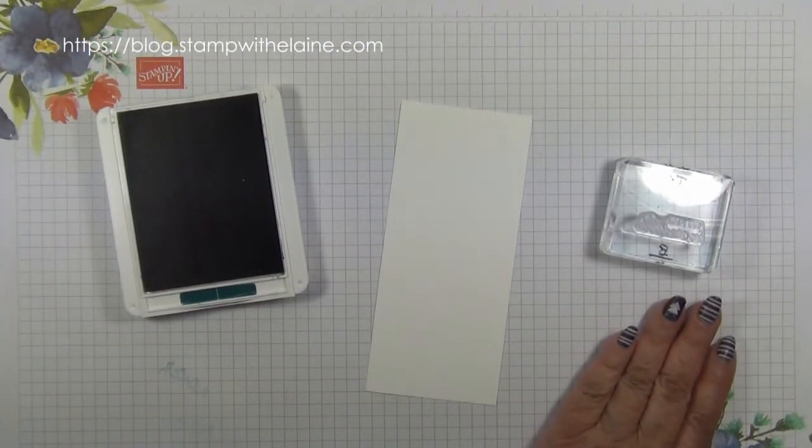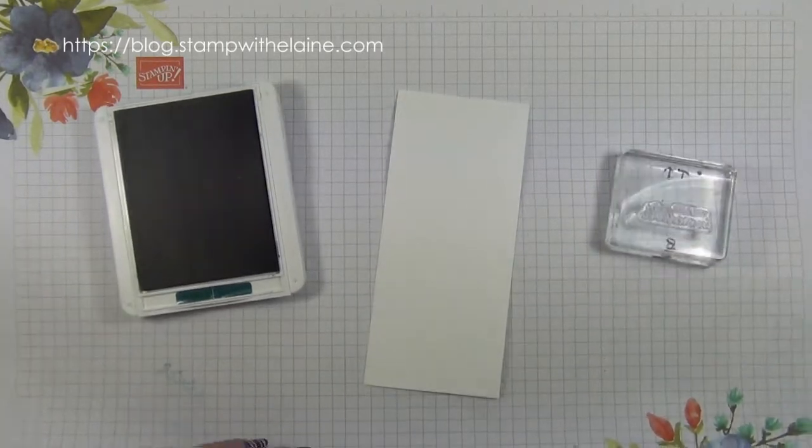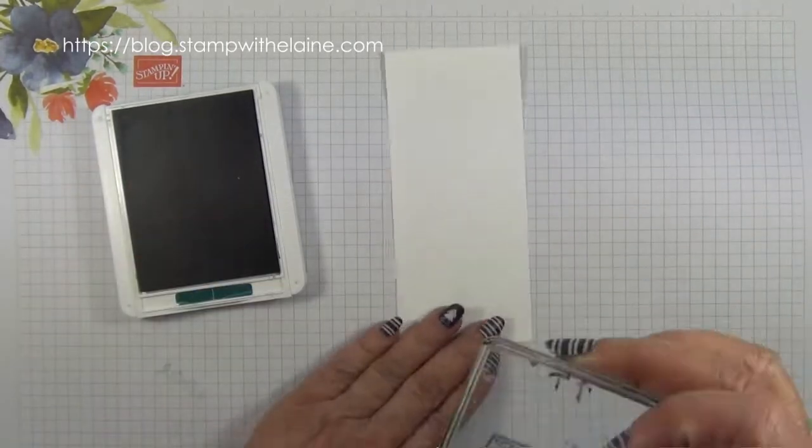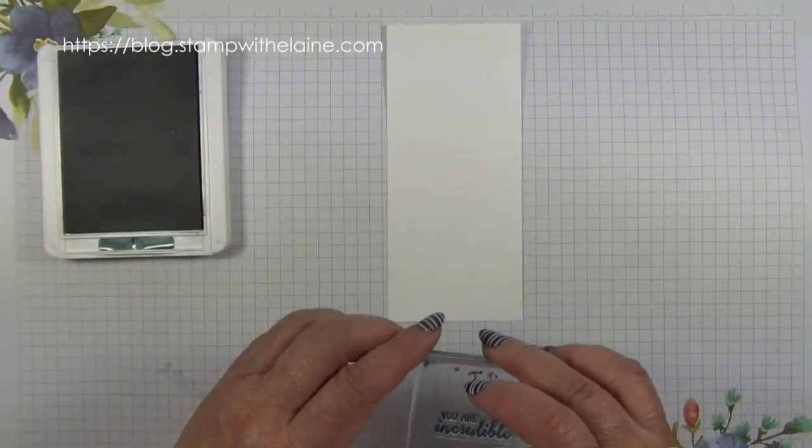I'll remove my foam mat because I'm using photopolymer stamp. And I'm just going to stamp my sentiment in Pretty Peacock.